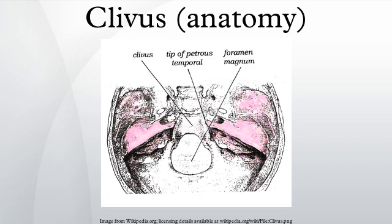Relation of the clivus and dens: the clivus is an important landmark for checking for anatomical atlanto-occipital alignment. The clivus, when viewed on a lateral c-spine x-ray, forms a line which, if extended, is known as Wackenheim's clivus line. Wackenheim's clivus line should pass through the dens of the axis or be tangential to it.